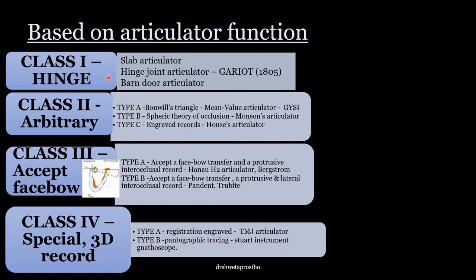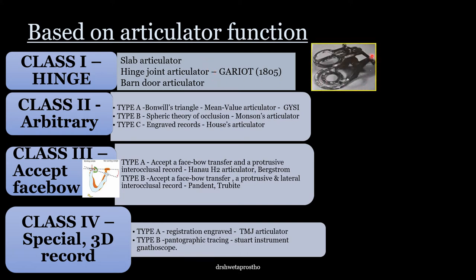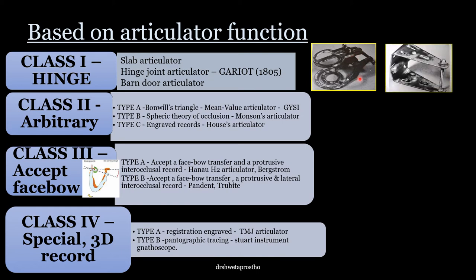Class 1 is the hinge type. Only vertical motion — single movement — is possible: open and close. They are simple articulators and accept a single static registration. They are used where tentative jaw relation is done. Examples are the slab articulator, hinge joint articulator, and the bound door articulator. The hinge joint articulator by Garriott has two metal frames — upper and lower — to which the cast could be attached, with a single hinge set of screws in the posterior to hold the frames at a fixed vertical position. The bound door articulator is also a hinge articulator, with the difference that it has a vertical stop at the anterior end, making it more reliable.